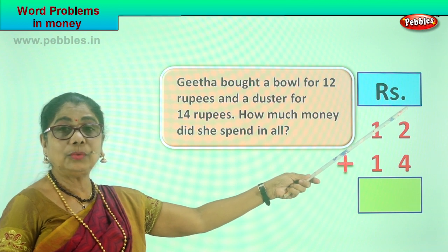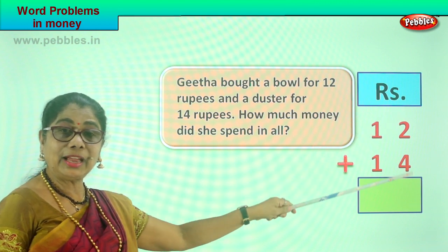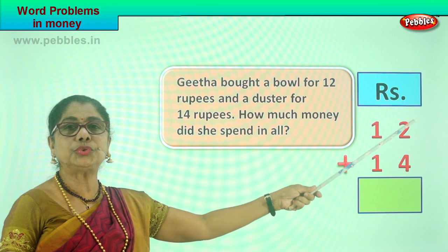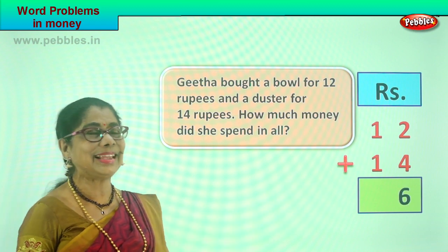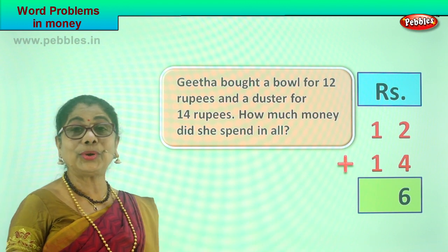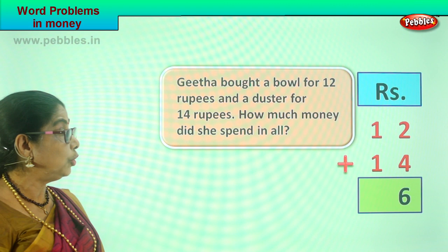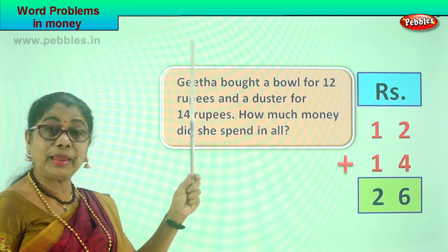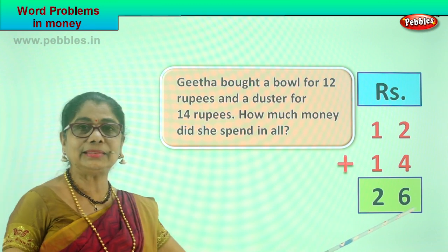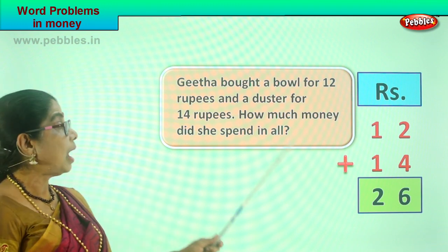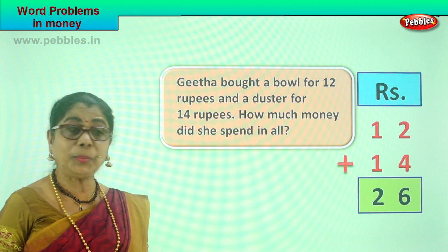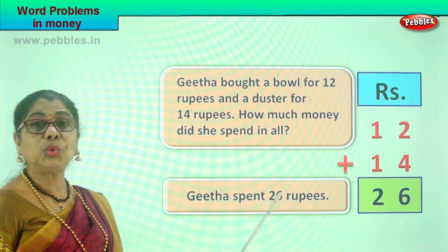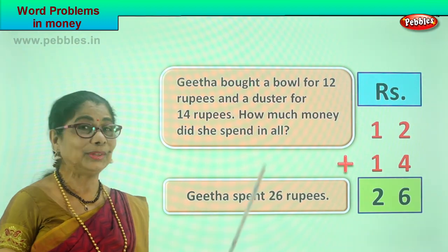We have arranged it in ones and tens. Let's go to the ones place: 4 plus 2 or 2 plus 4 is 6. Then to the tens place: 1 plus 1 is 2. So how much did Geeta spend for a bowl and a duster? 26 rupees. How much money did she spend in all? Geeta spent rupees 26 in all. That is the answer — Geeta spent rupees 26. Did you enjoy shopping with Geeta?